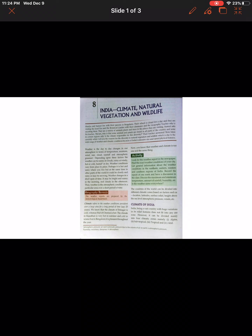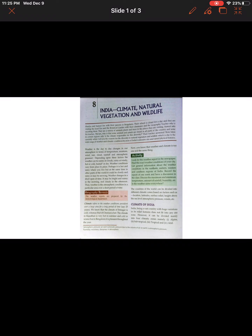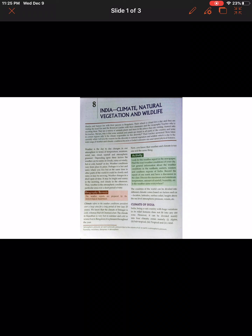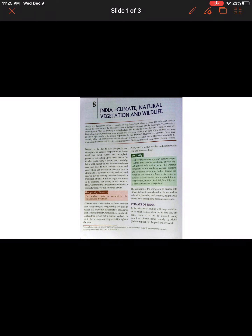Good morning children. Today we are going to begin with India's climate, natural vegetation and wildlife. In this chapter we will see how the climate of a country affects and forms the diversity in natural vegetation and wildlife. India has different kinds of climate because it has different kinds of landforms — plateau region, mountain region, plain region, desert areas, island groups, and coastal plains — leading to different climatic conditions.